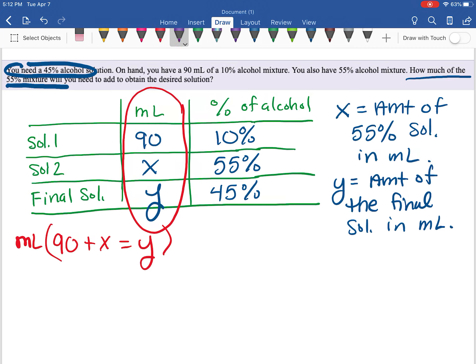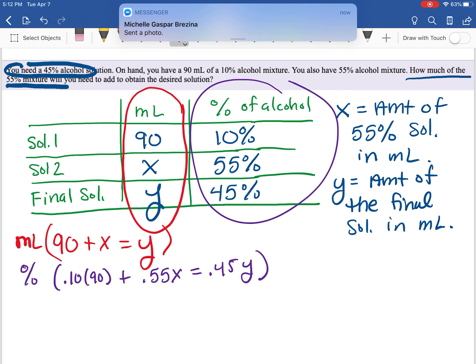Now for the percentage of alcohol for this column, I can come up with another equation. If I take 10% of 90 and I add it to 55% of x, that should give me 45% of y. So there's my second equation in terms of percentages.